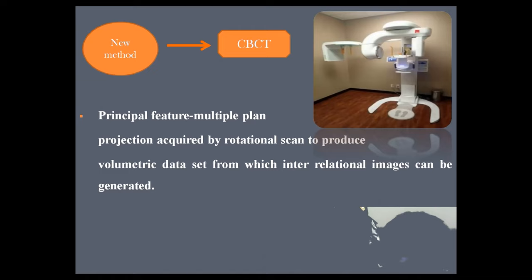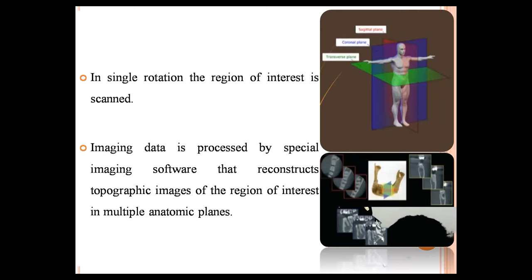In CBCT, multiple planar projections are acquired by rotational scanning to produce a volumetric dataset from which interrelational images can be generated. In a single rotation, the region of interest is scanned and the imaging data is processed by special imaging software that reconstructs topographic images of the region of interest in multiple anatomic planes.